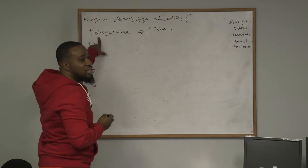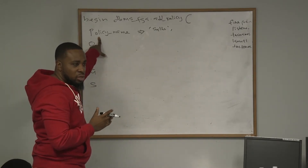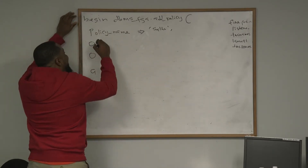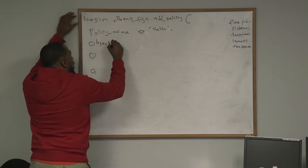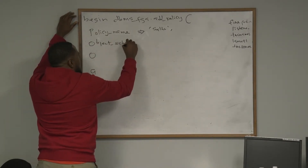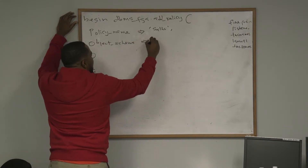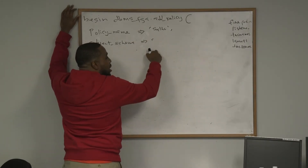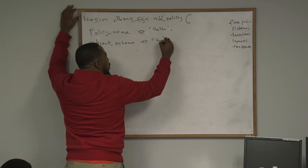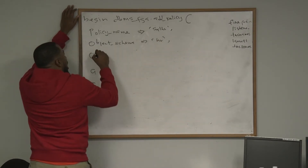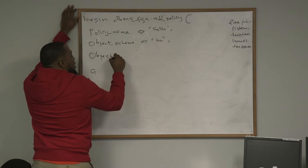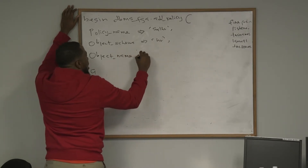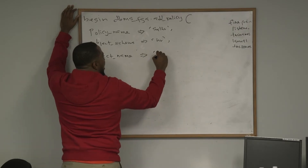Then OBJECT underscore SCHEMA — that's the second biggest one. OBJECT underscore SCHEMA equals-to-greater-than, and for the schema I said HR — close the quote. Then OBJECT underscore NAME equals-to-greater-than, and the object name is EMPLOYEES.